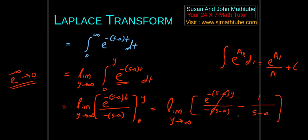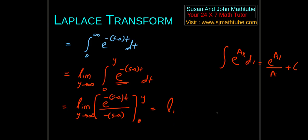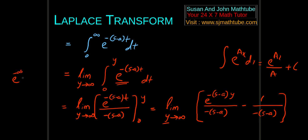Now just apply the limit. I am sure that you know e to the power minus infinity tends to 0. We plug in the upper limit, so we get e to the power minus (s minus a) times y divided by minus (s minus a), minus we plug in 0, so we get 1 by minus (s minus a). Now we plug in y as infinity. E power minus infinity tends to 0.